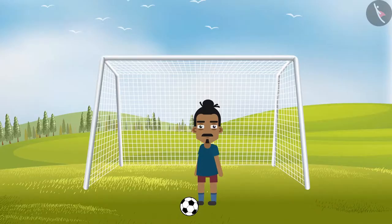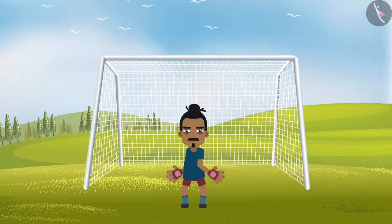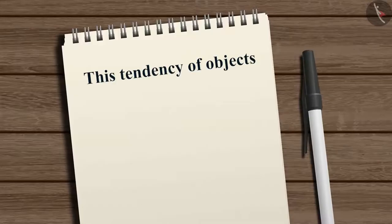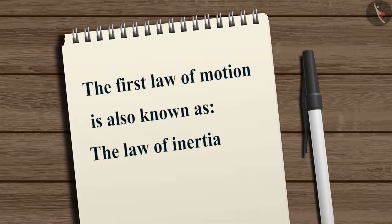A football on the ground does not move unless the footballer kicks it, and a football going towards the goal will not stop unless the goalkeeper stops it. This tendency of objects to remain at rest or to keep moving with the same velocity is called inertia. That is why the first law of motion is also known as the law of inertia.